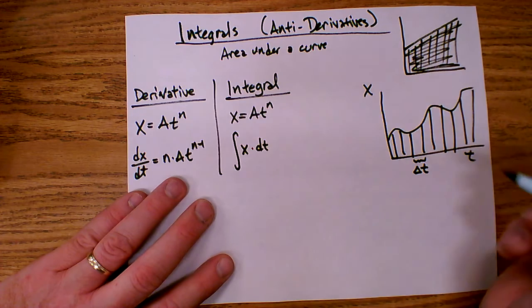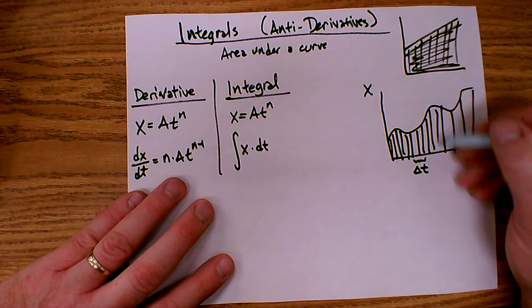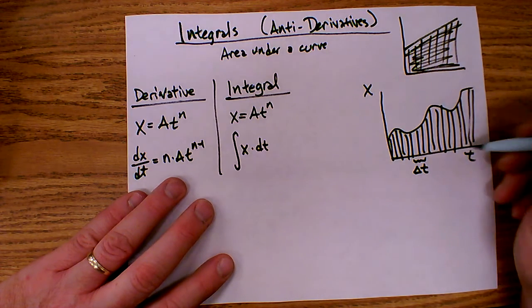So if I imagine I can get more and more accurate by slicing it thinner. In other words, as delta t gets smaller and smaller, I get more and more accurate.